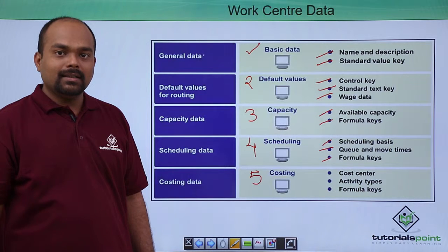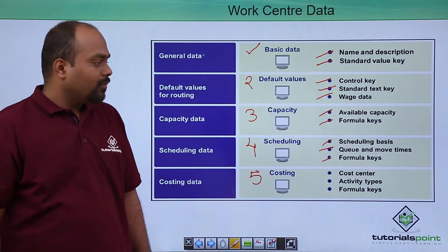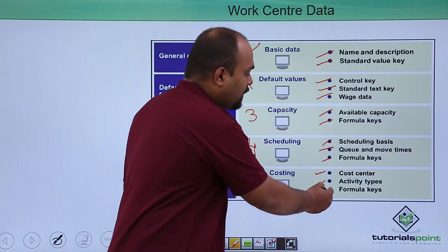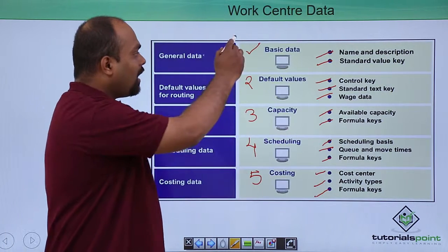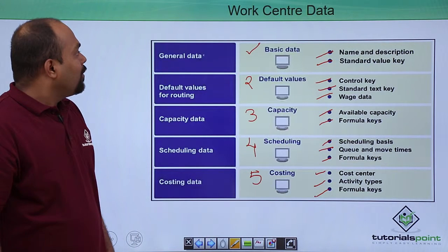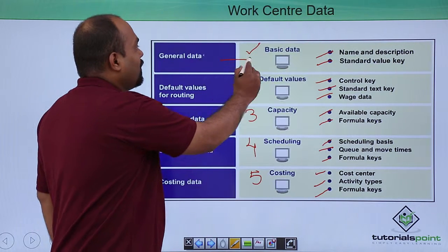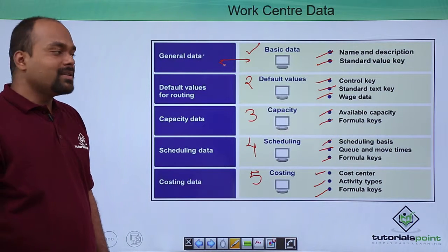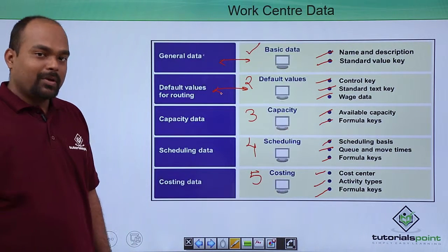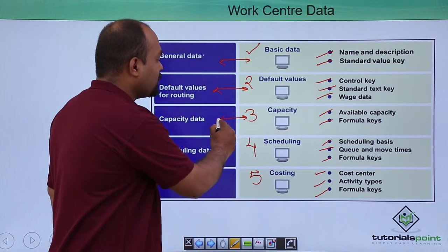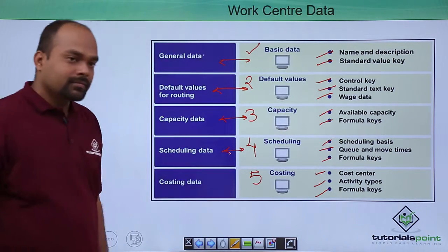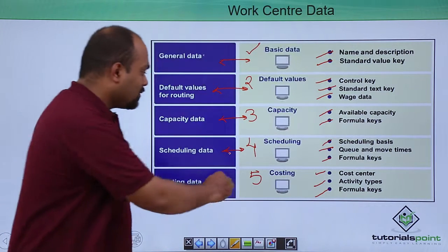And in costing view, we put a cost center, activity type, and formula keys. So these are the basic work center data which are required. Basic data comes under general data, default values comes under default values for routing, capacity data comes under the capacity view, scheduling data under scheduling view, and costing data under costing view.